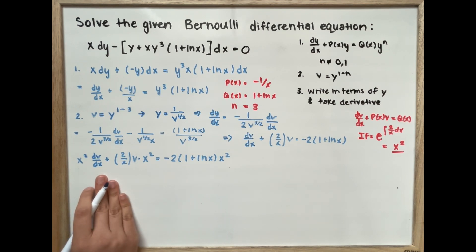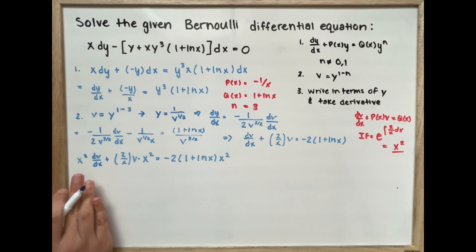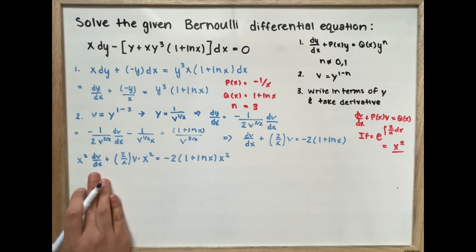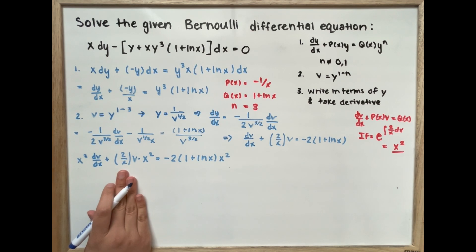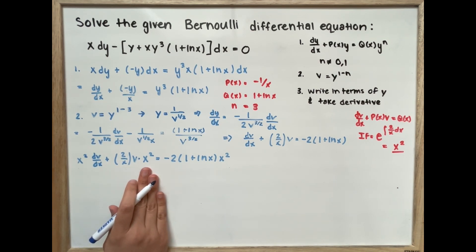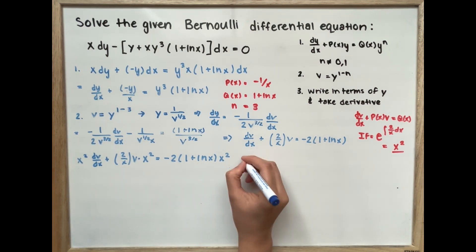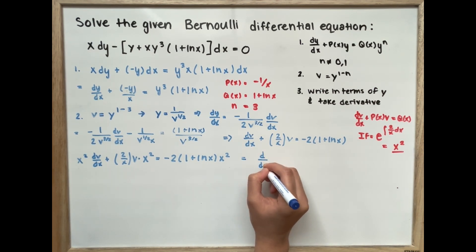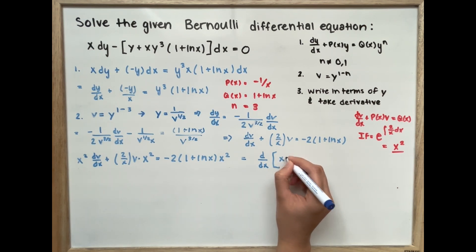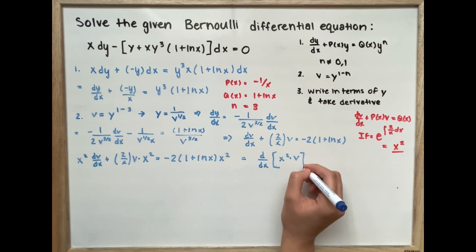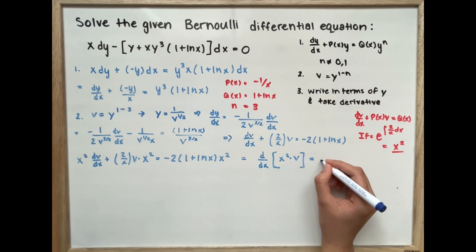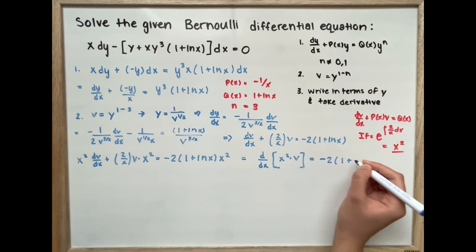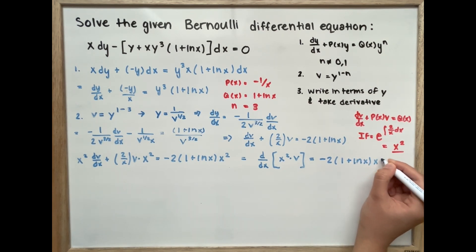Looking at the left side carefully, this is written in the form where u equals x squared — it is v times du/dx plus u times dv/dx. We can simplify and write it as d over dx of u, which is x squared, multiplied by v. We set this equal to negative 2 times (1 plus ln of x) times x squared.